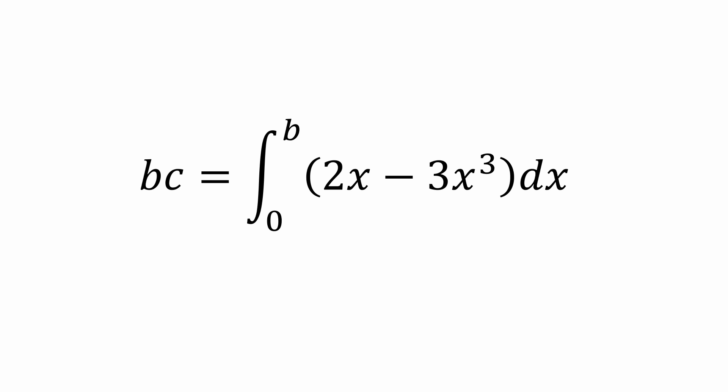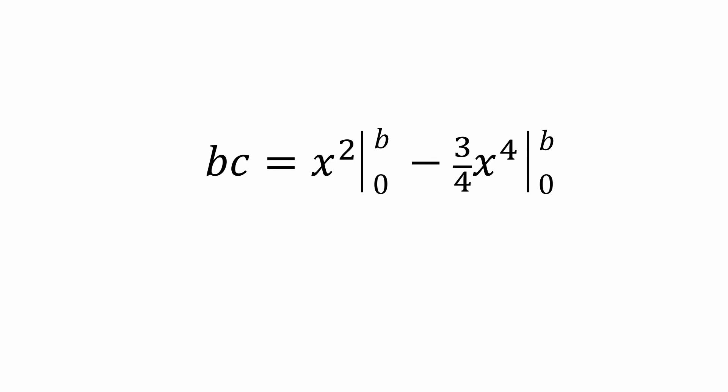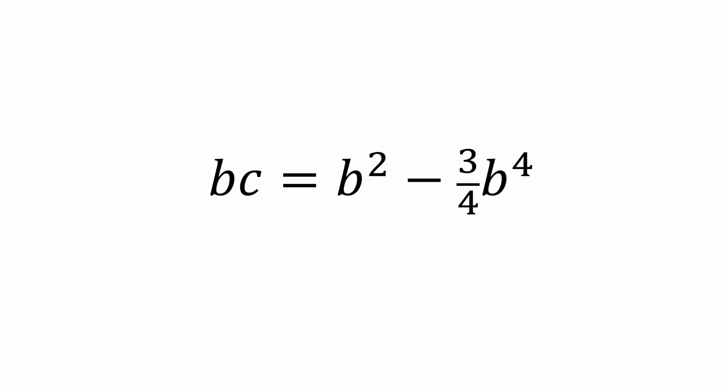Using our power rules for integration, we know that the integral of 2x is x squared and the integral of 3x cubed is 3 fourths times x to the fourth. Now we can evaluate the right side using the limits of integration and get the following equation in terms of b and c.